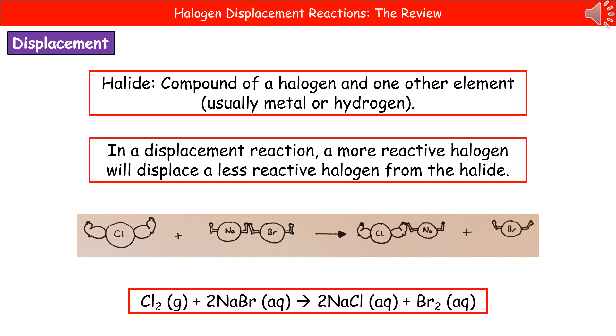Make sure that you can also write the balanced symbol equation for this, which I've given you at the bottom there. We start off with our chlorine, Cl2. We then react that with our sodium bromide, in this case, NaBr. And we then make NaCl, sodium chloride, and bromine, Br2.